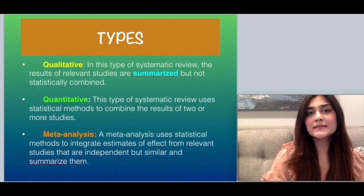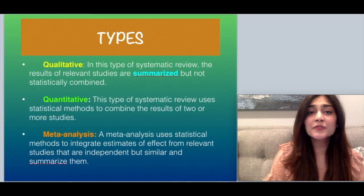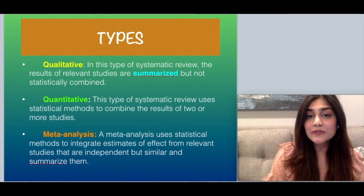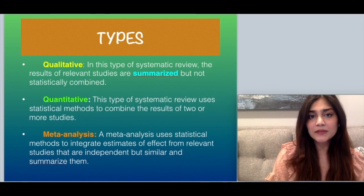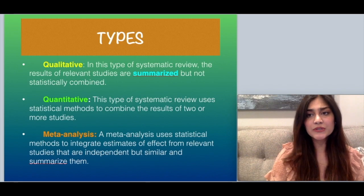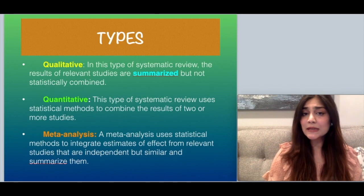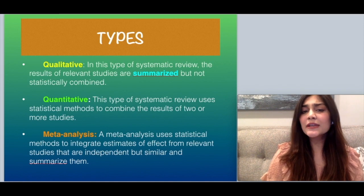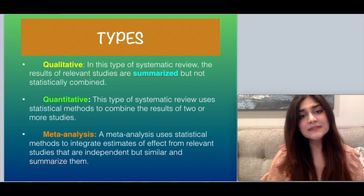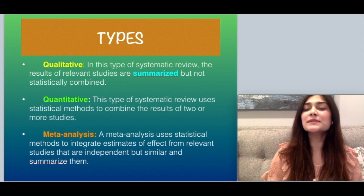What are its types? There are three types. The first type is qualitative, in which the results of the relevant studies are summarized but not statistically combined. In the quantitative type, you use statistical methods to combine the results of two or more studies. In meta-analysis, you use statistical methods to integrate estimates of effect from relevant independent but similar studies and then summarize them.